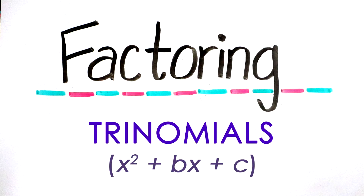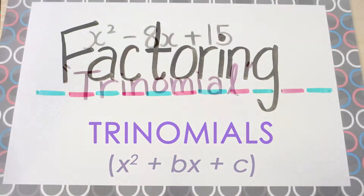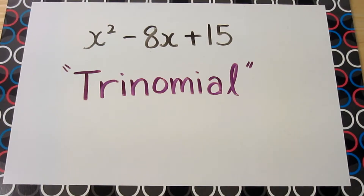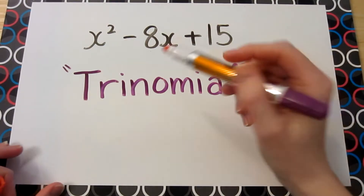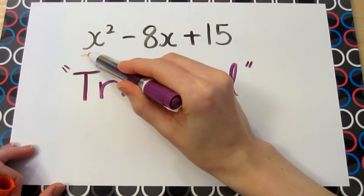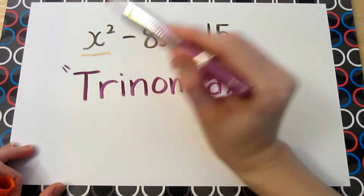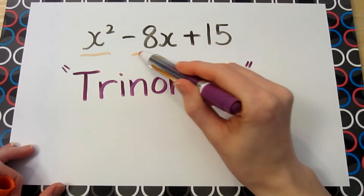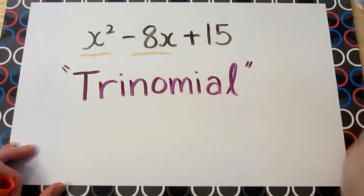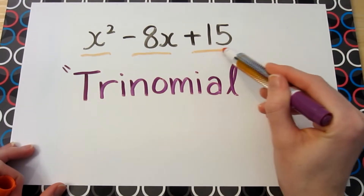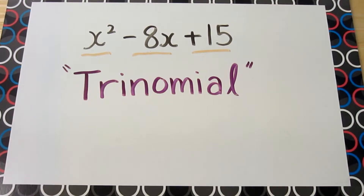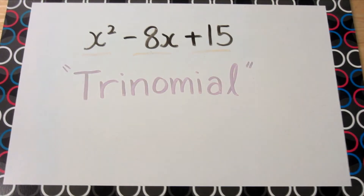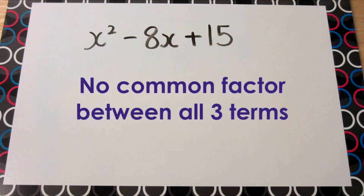Sometimes you'll be asked to factor a trinomial, which is an expression containing three terms. In this example, we have x squared, which is one term, negative 8x, which is another term, and positive 15, which is the third term. Upon first glance, trinomials might seem unfactorable because there's no common factor. So where do you start?